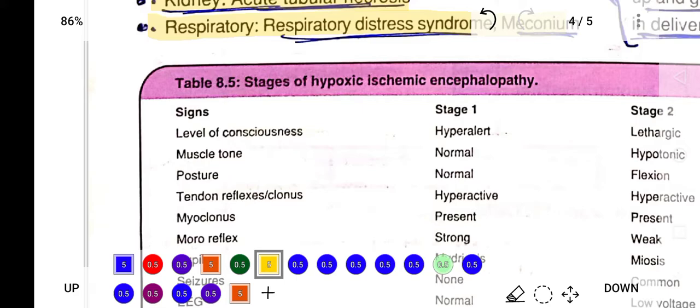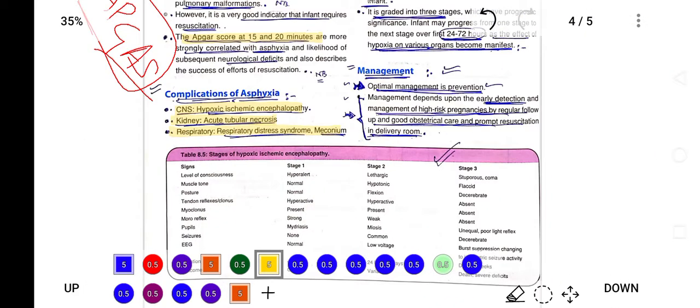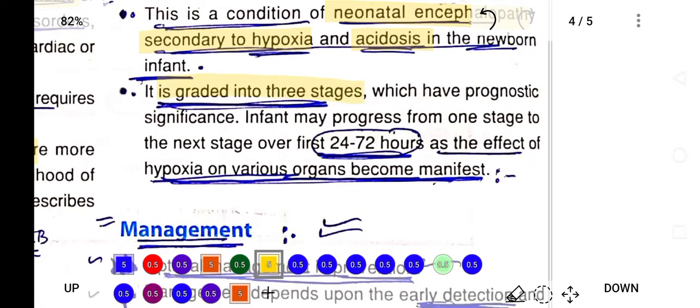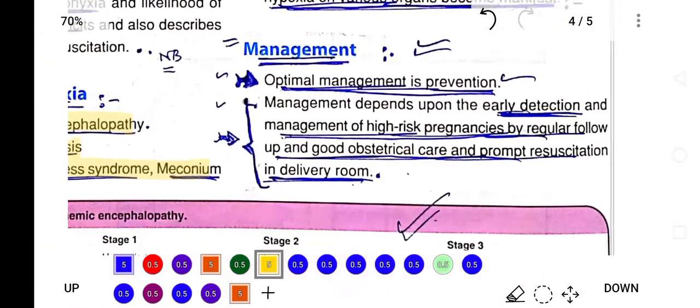Hypoxic ischemic encephalopathy is a condition in which neonatal encephalopathy occurs because of hypoxia, in which acidosis occurs. Three grades are there in hypoxic ischemic encephalopathy. In this way, this condition presents hypoxic ischemic encephalopathy.